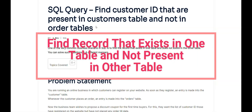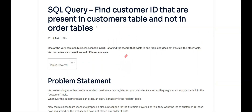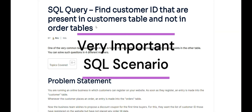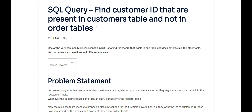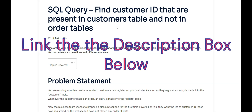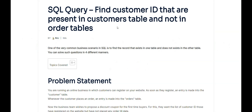We want to find a record that exists in one table and does not exist in the other table. We do a lookup from one table into another, identify if the record exists or not, and if it does not exist we show it in the result set. We will share this web link in the description box below so you can check out the SQL query and dummy data.